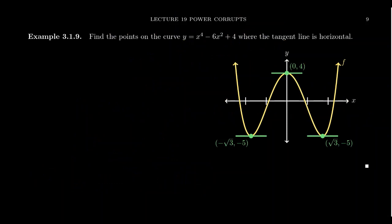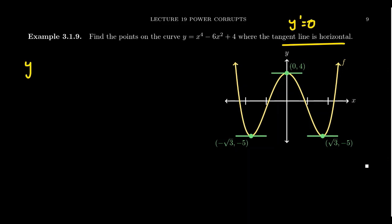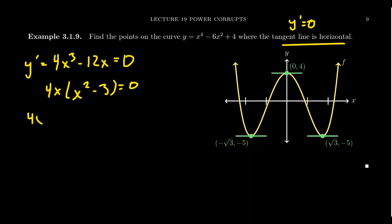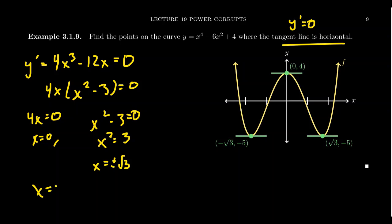For one last example, let's find the horizontal tangent lines of y equals x to the fourth minus 6x squared plus 4. A horizontal tangent means the derivative equals zero. The derivative y prime equals 4x cubed minus 12x, and the derivative of the constant 4 goes to zero. Setting 4x cubed minus 12x equal to zero, we factor out 4x to get 4x times x squared minus 3 equals zero. From 4x equals zero, x equals zero; from x squared minus 3 equals zero, x equals plus or minus the square root of 3. So there are three horizontal tangent lines, at x equals 0, x equals the square root of 3, and x equals negative the square root of 3.